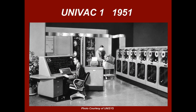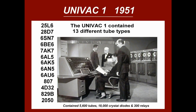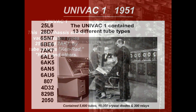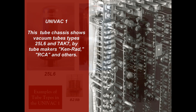The following slides list 13 of the tube types found in the UNIVAC-1 and show some examples. The UNIVAC-1 was 25 feet by 50 feet in length, containing nearly 5,600 tubes, 18,000 crystal diodes, and 300 relays.